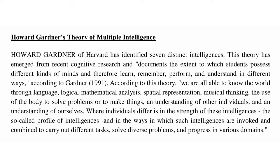Howard Gardner's theory of multiple intelligences. Gardner of Harvard has identified seven distinct intelligences. This theory has emerged from recent cognitive research and documents the extent to which students possess different kinds of minds and therefore learn, remember, perform, and understand in different ways, according to Gardner in 1991.